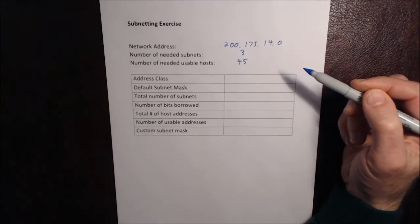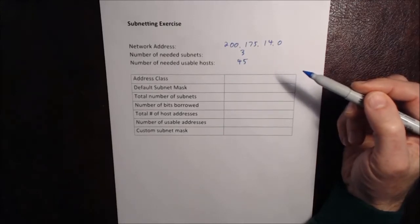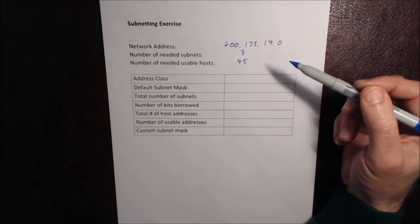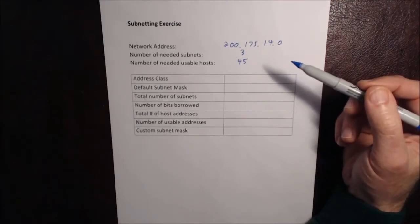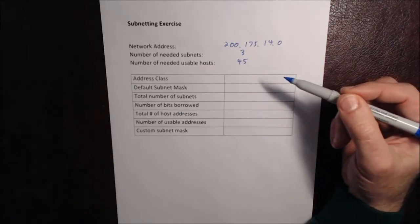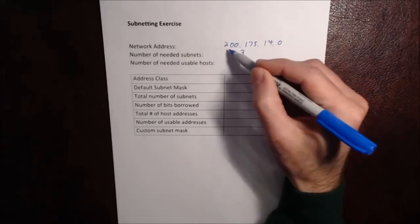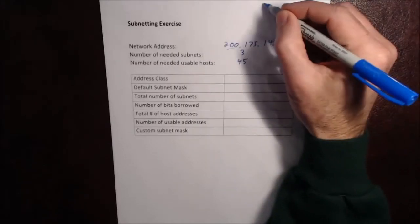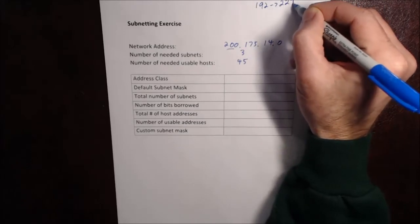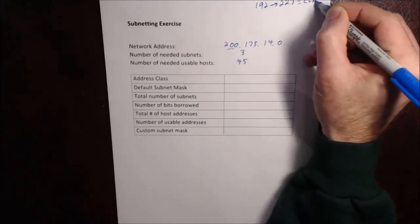This information will be provided to you if you're taking an exam or a quiz. In the real world, it would probably come to you from the network engineer or a senior network technician. So the first thing we need to determine is our address class. In this case, we know that it is a Class C because the first octet falls between 192 to 223, and that equals Class C.